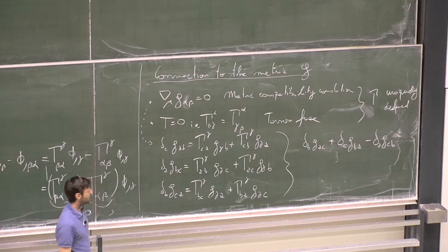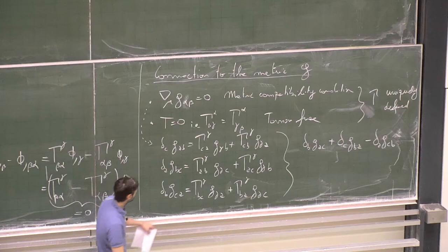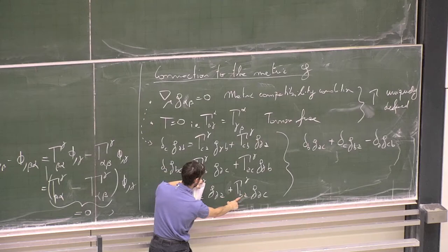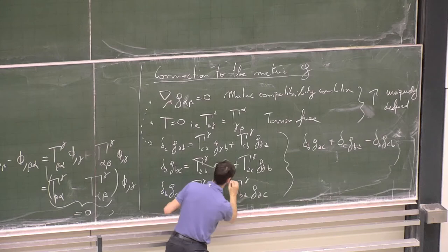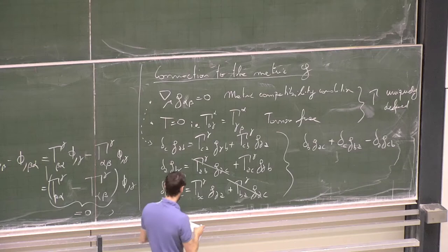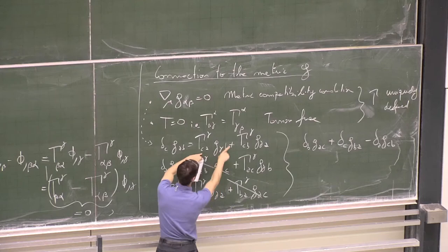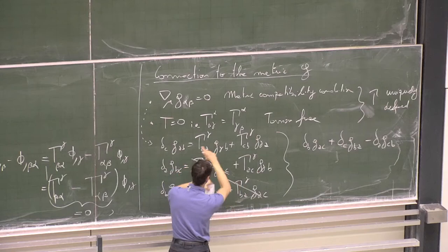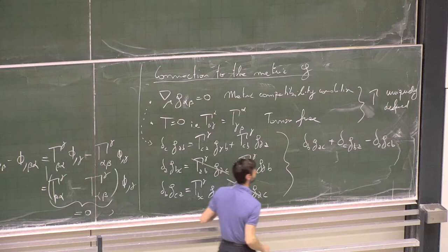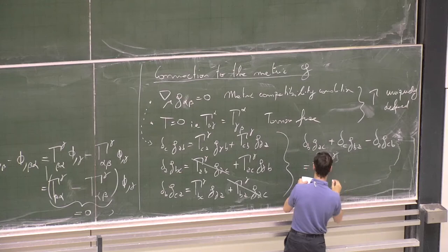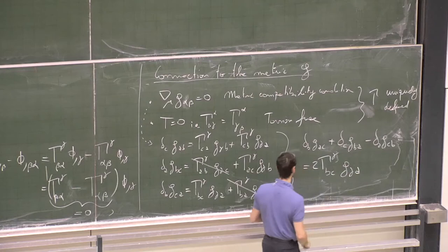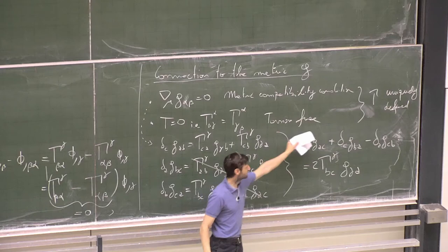After cancellation, we get that the combination equals 2 Γ^γ_BC g_γA. Only the metric and this one affine connection term remain. So I isolate the affine connection term by multiplying both sides of the equation by the inverse metric g^(γA).